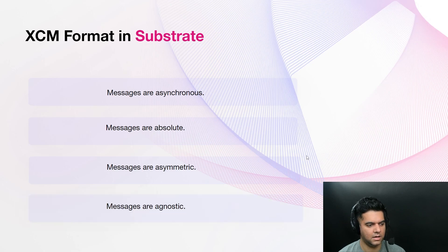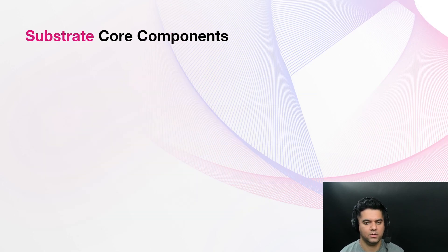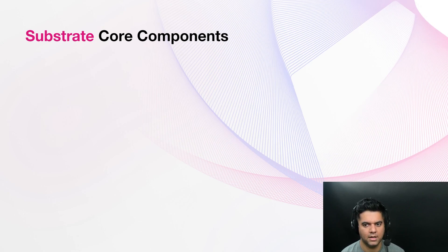Messages are agnostic and make no assumptions about the consensus systems between which these messages are passed. As a blockchain builder's toolkit, Substrate enables you to develop any type of blockchain you can imagine and to define its boundaries based on your application-specific requirements. With this flexibility in mind, one of the decisions you need to make is the type of network you want to build and the role the different nodes might play in the network.